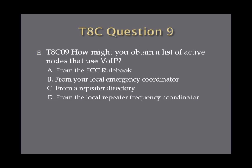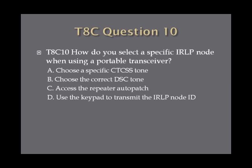Question nine: How might you obtain a list of active nodes that use VoIP? A, from the FCC rule book. B, from your local emergency coordinator. C, from a repeater directory. Or D, from the local repeater frequency coordinator. Question ten: How do you select a specific IRLP node when using a portable transceiver? A, choose a specific CTCSS tone. B, choose the correct DSC tone. C, access the repeater auto patch. Or D, use the keypad to transmit the IRLP node ID.